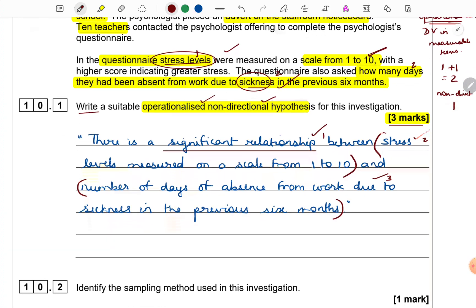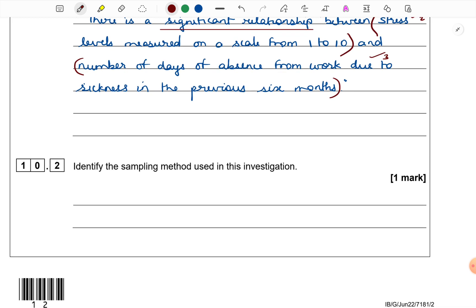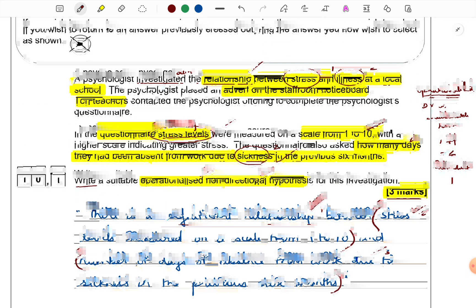Let us come to the next question. Identify the sampling method used in this investigation. It is for one mark and the command term is identify, means we literally have to just name the method. We do not need to explain it, neither do we need to give any strengths or weaknesses of the method.